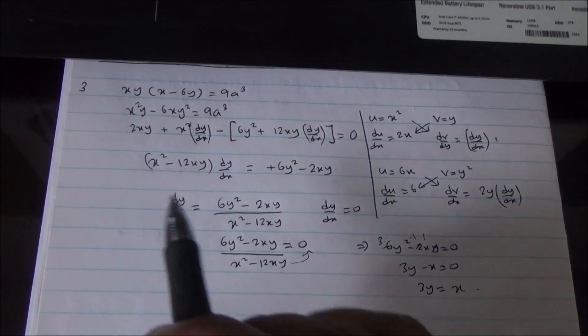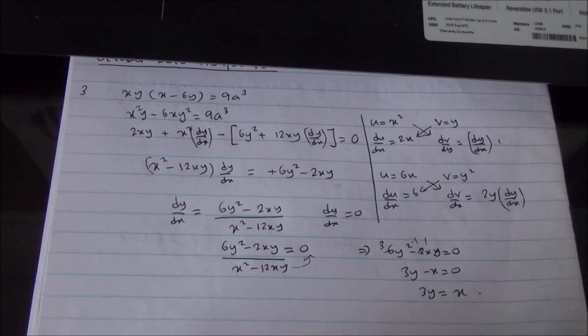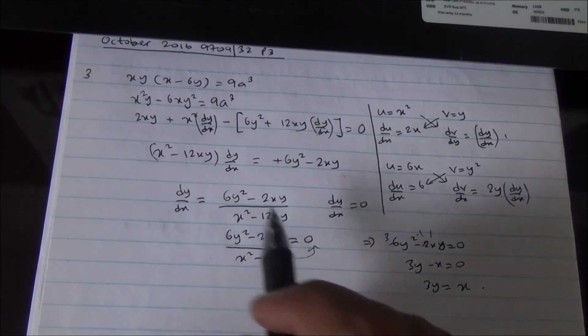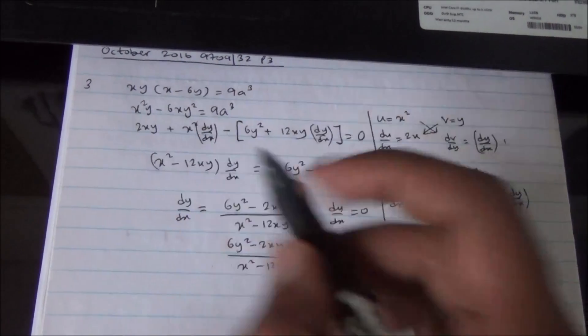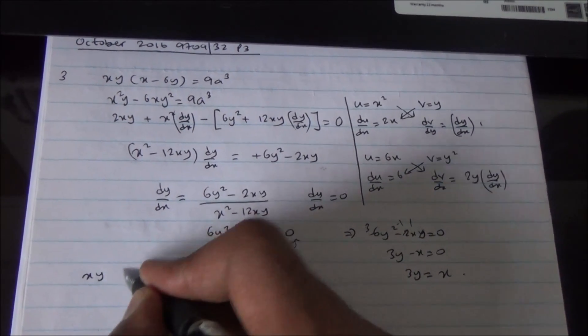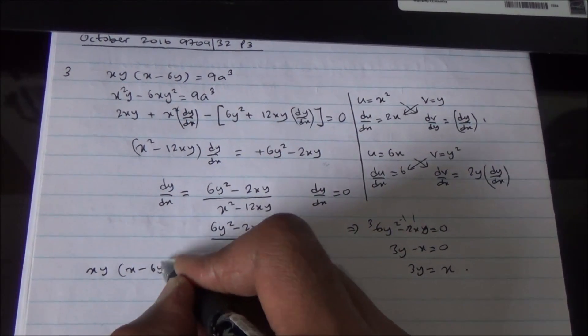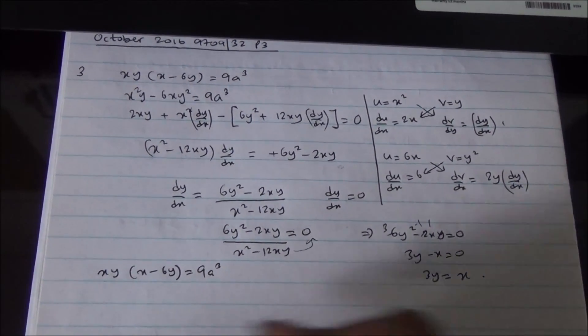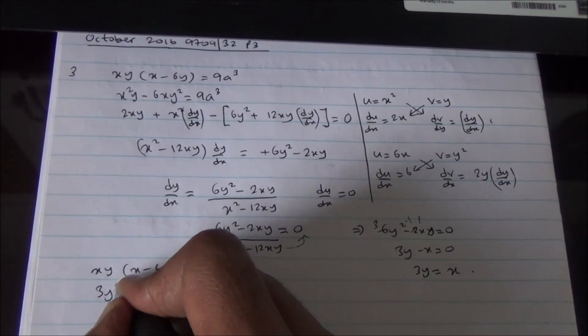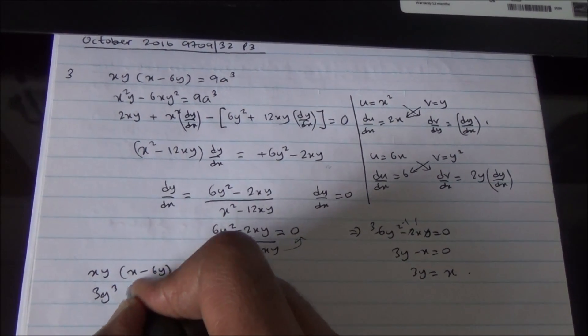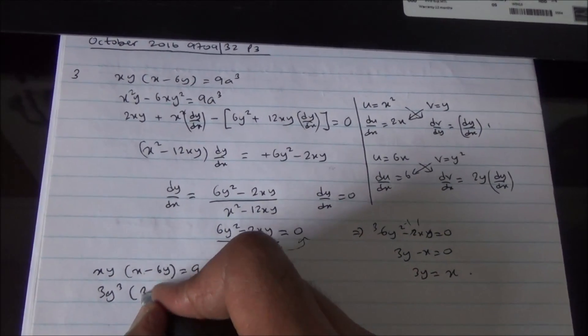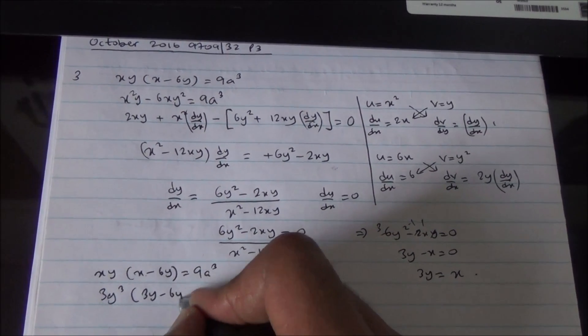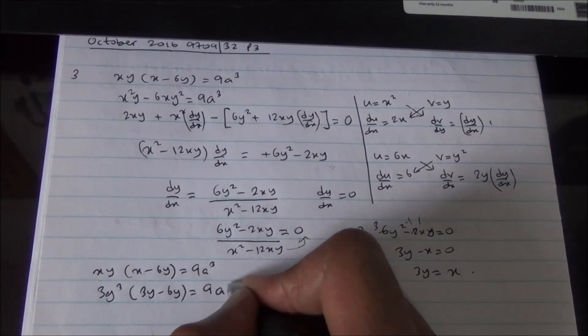Now, we need to find the coordinates of that point. How are we going to do this? This x can be substituted into the equation. So, the equation is xy times x minus 6y is equal to 9a cubed. What is x? 3y. So, 3y times y times 3y minus 6y is going to give us 9a cubed.